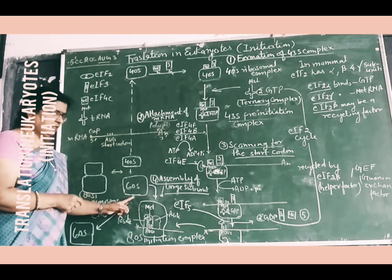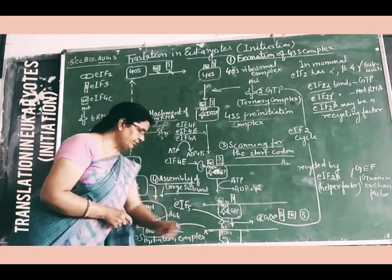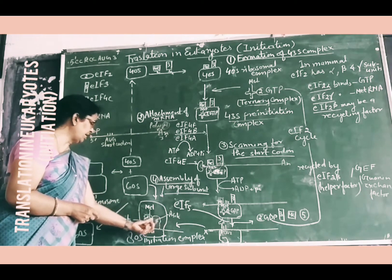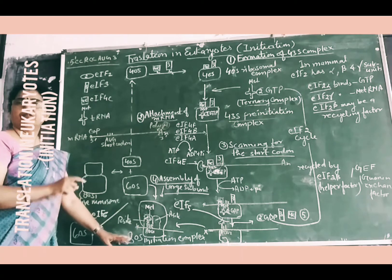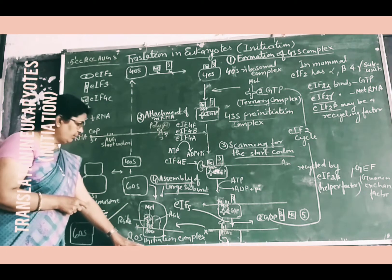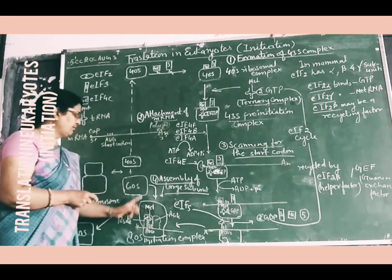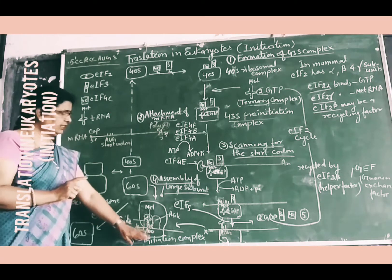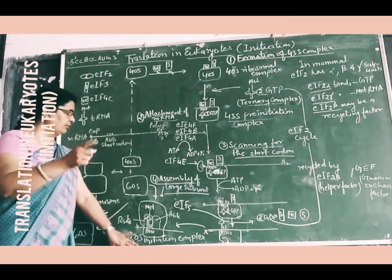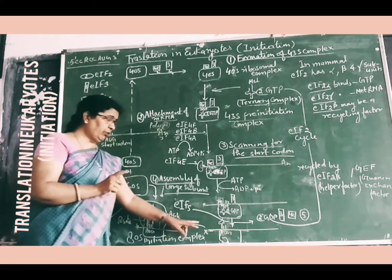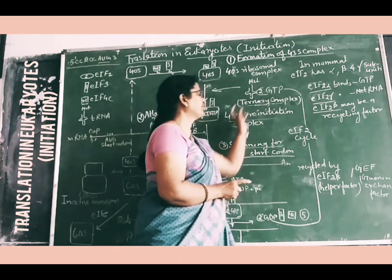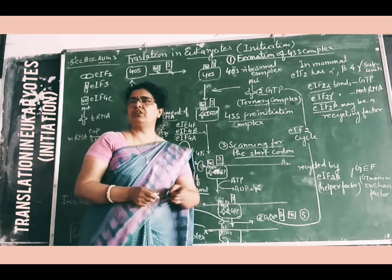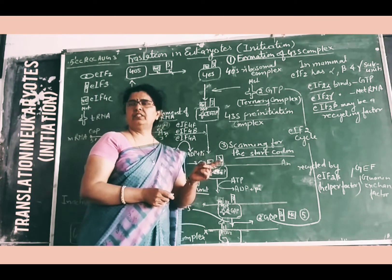The 60S subunit, being free, attaches to the small 40S subunit. The 40S subunit has A-site and P-site. The 80S initiation complex is now formed, which is ready for the first codon of protein synthesis. There is now an initiation complex involved in the process of elongation. An important aspect is the EIF2 cycle, which is also involved in the regulation of initiation of translation in eukaryotes.